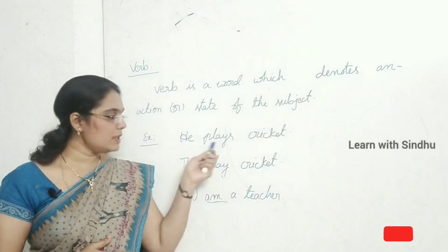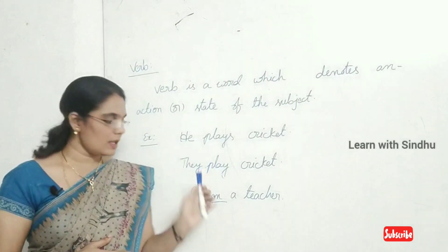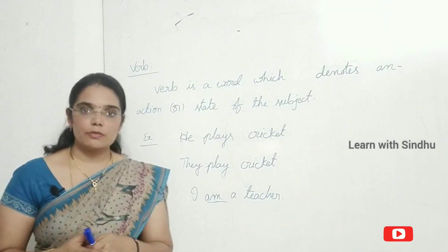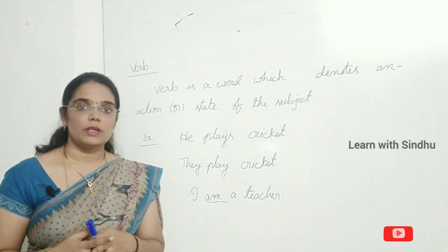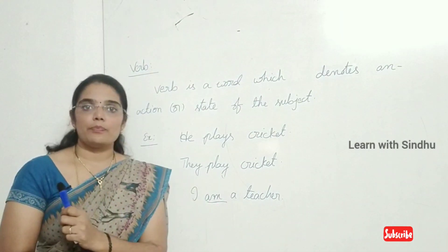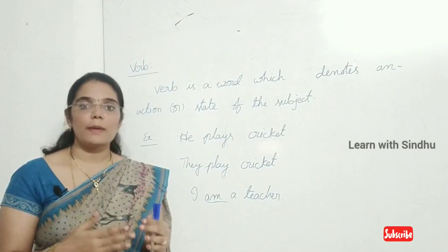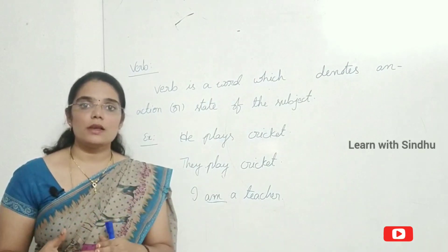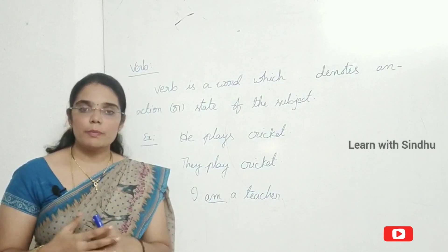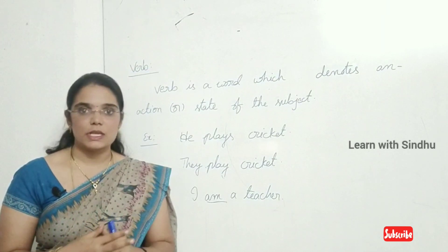They play cricket. In these two sentences, the word denotes the action in the sentence. And here: I am a teacher. What is the verb here? 'Am' is the verb. It denotes the state — I am a teacher, he is a teacher, you are a teacher. 'Am', 'is', 'are' — all these are BE forms. They denote the state or condition or situation of the subject in a sentence.